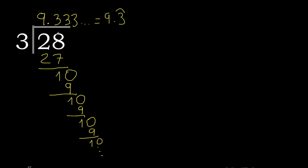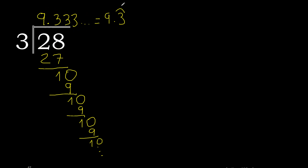Therefore 28 divided by 3 is this — or written between notations: 9.333... or 9.3 repeating, with point 2, 0 and point 3, 2.